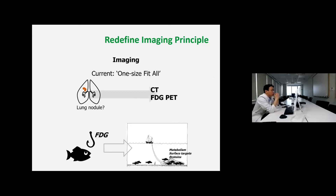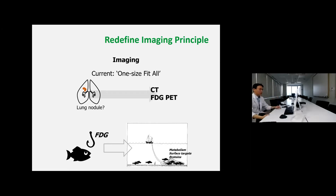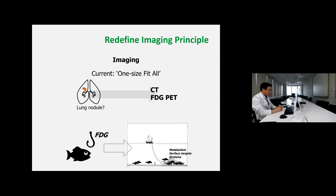But let's think about our imaging study. For imaging, we use a one-size-fits-all approach. If we find a lung nodule, we just get CT or FDG PET. We have a lot of tracers in investigation, but in the clinical field we just use one tracer: FDG. FDG can provide some information on metabolism, but we have many available tracers. We just use only FDG PET — it is the one-size-fits-all principle, which is different from the recent trends in precision medicine. We should change our principle according to the big trends in precision medicine.